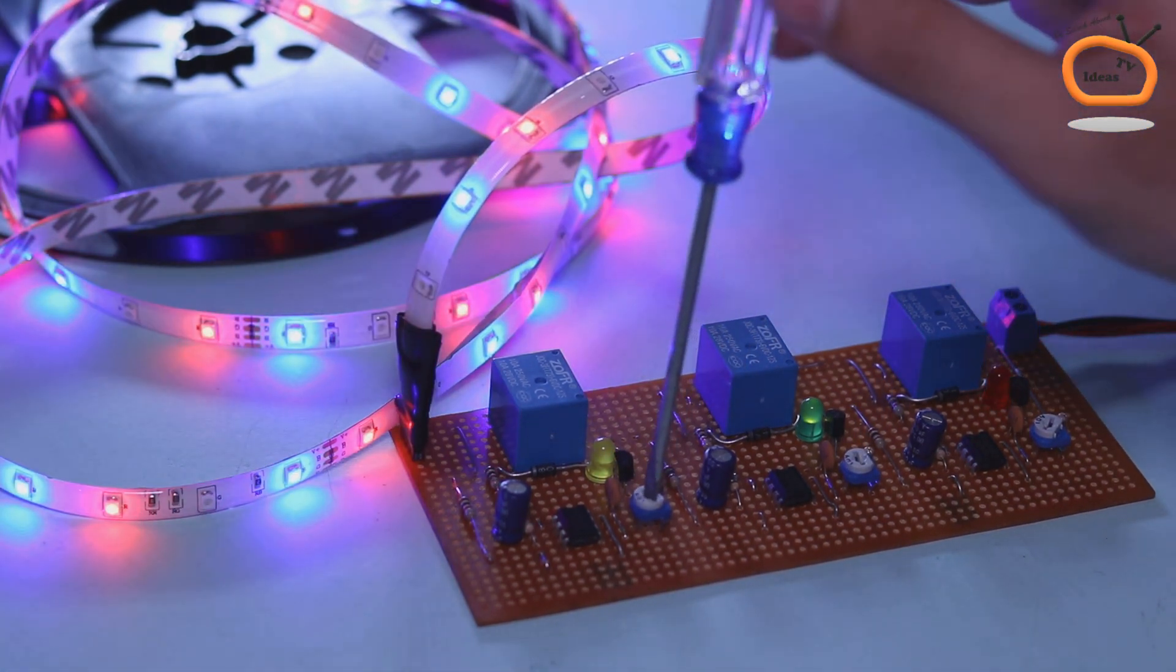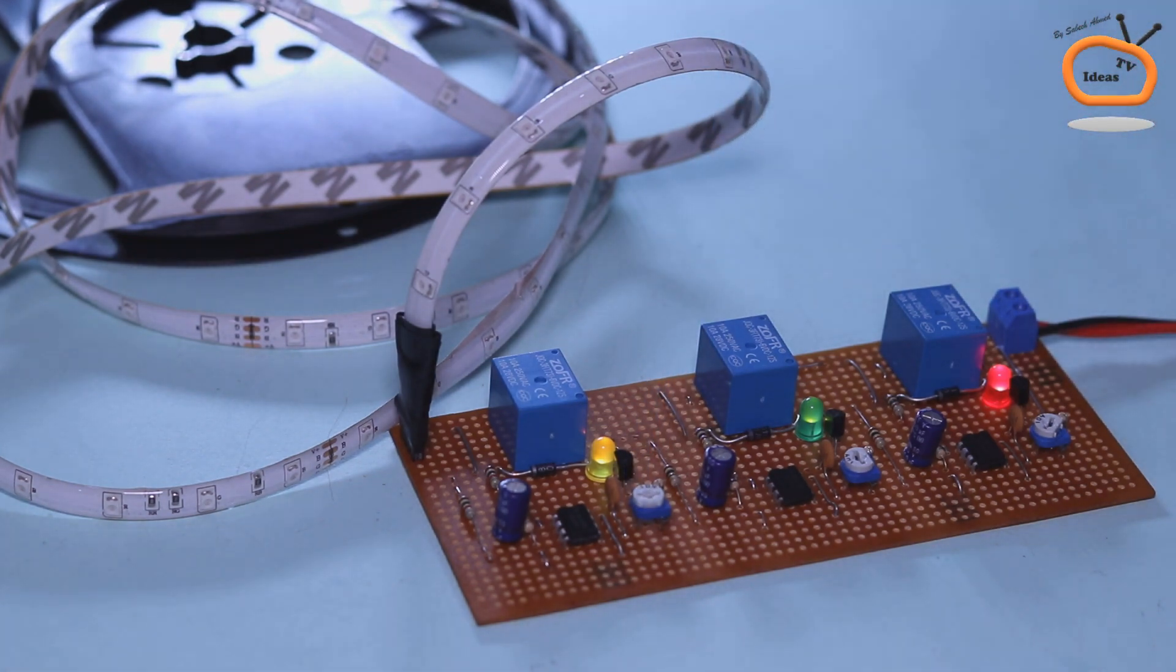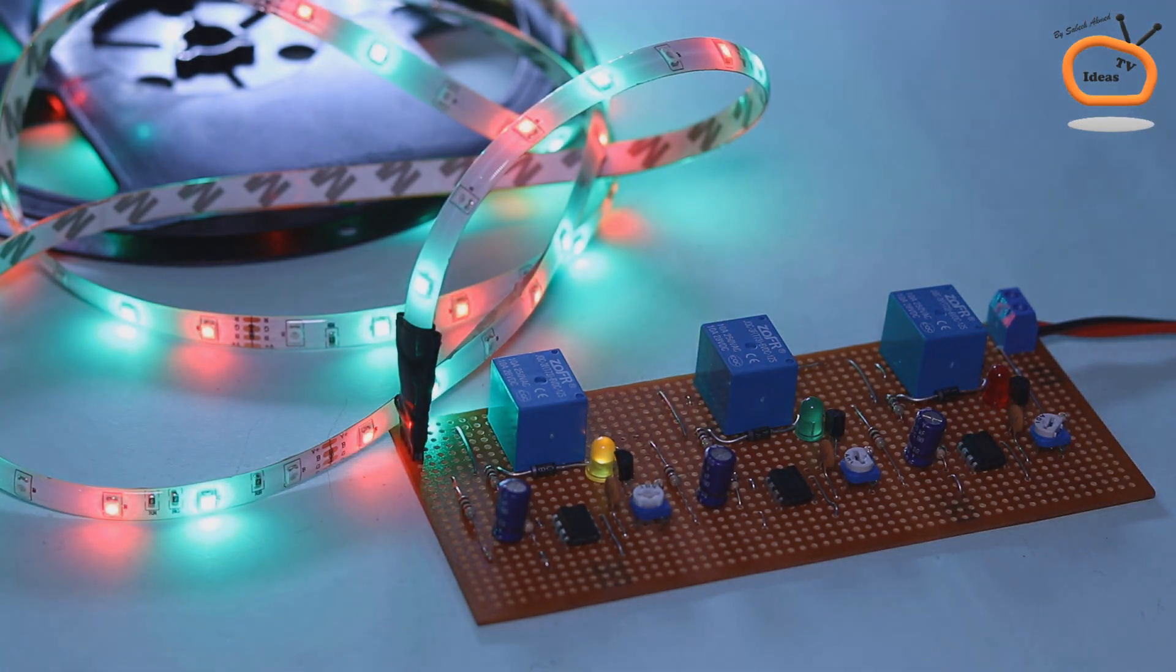As you can see, the behavior of RGB changes as I am adjusting the resistance.